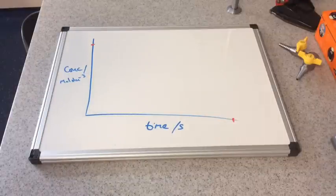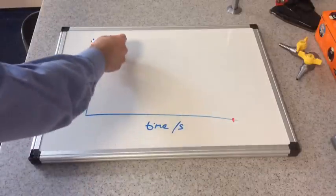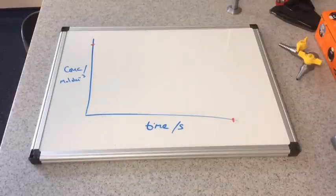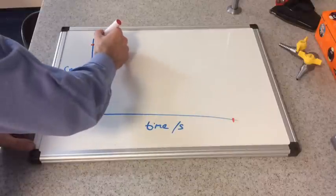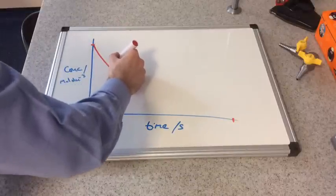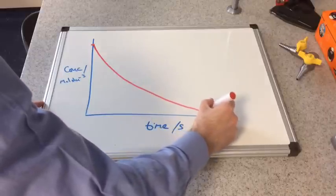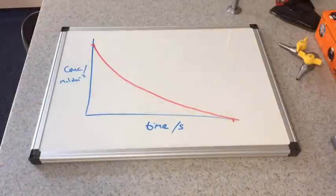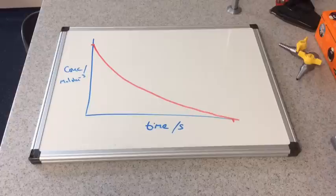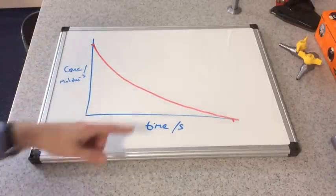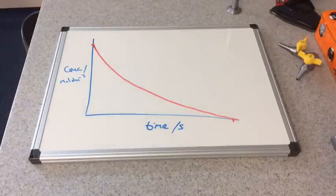Now what we find is that it doesn't change proportionately. The rate actually differs as the reaction takes place. And so you would see a curve rather than a straight line. So remember this curve is to represent how the concentration of the reactants is changing as the reaction is taking place.